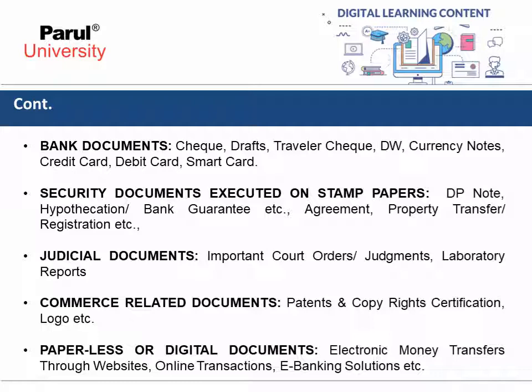The next classification is judicial documents, which may include important court orders, judgments, laboratory reports, or summons. The next classification is commerce-related documents, which may include patents, copyright certifications, and logos. And the next classification is paperless or digital documents, which may include electronic money transfers through websites, online transactions, and e-banking solutions. That's all about the classification of documents.